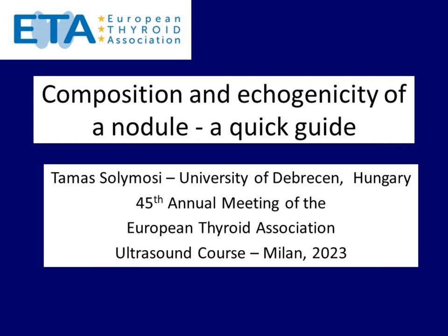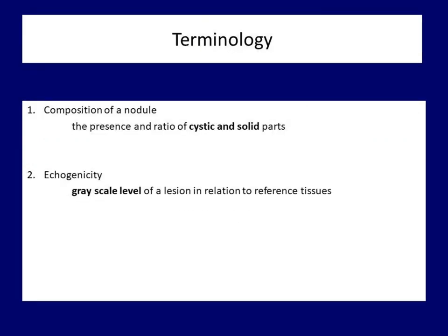Dear colleagues, in this short video I will discuss the two basic features of a nodule: the composition and the echogenicity. The composition of a lesion refers to the lack or presence of cystic and solid portions and the ratio of them. The echogenicity refers to the grayscale level of the solid part of an anatomical structure.